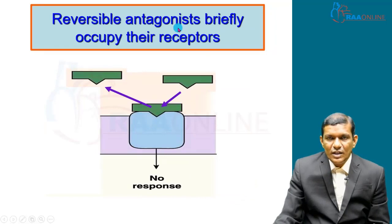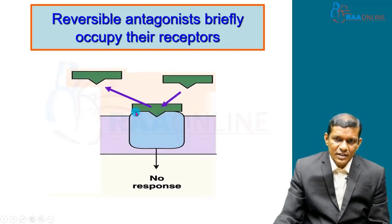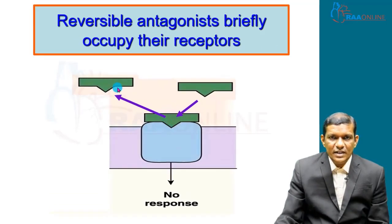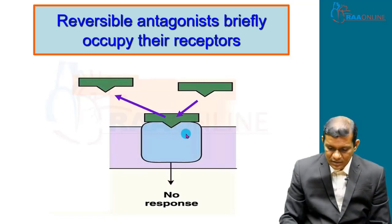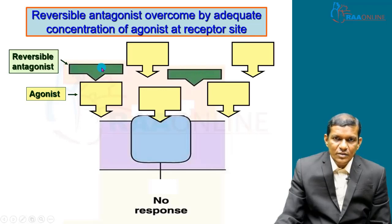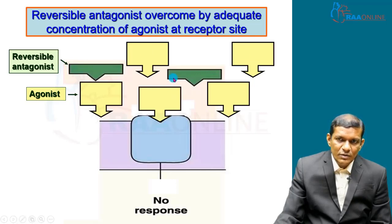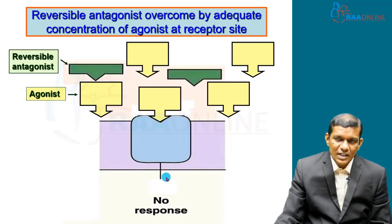There are two types: reversible antagonist and irreversible antagonist. When a reversible antagonist binds to the receptor, it blocks for a period of time, then dissociates from the receptor site, leaving the receptor free for the agonist to bind. If you increase the concentration of the agonist, it will displace the antagonist and bind to produce the response. So a reversible antagonist is one which can be overcome by an adequate concentration of agonist at the receptor site.